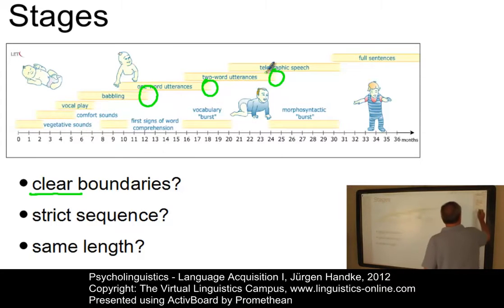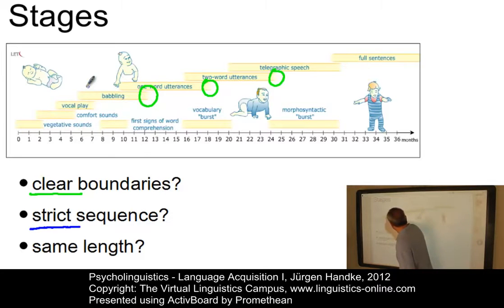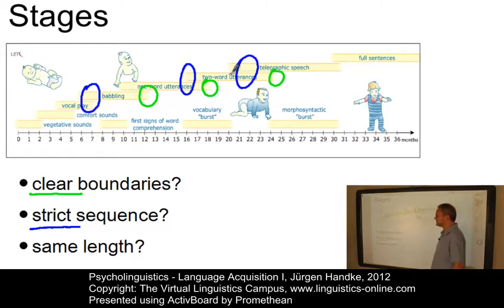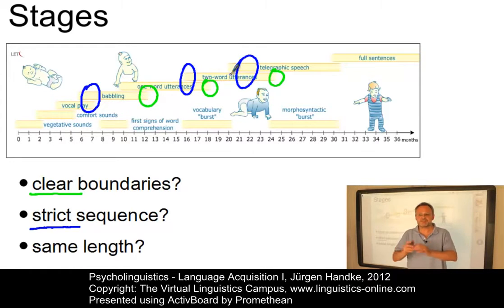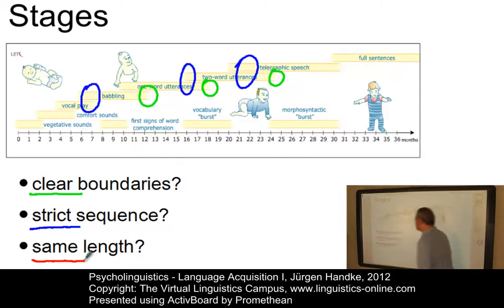The second question concerns the sequential character of these stages of language acquisition. It is relatively clear that they do not occur in a strict sequence, but overlap to some extent. While normal children pass through all of these stages, individual stages can be stretched out or compressed to a different extent for different children — in other words, these stages differ in length for individual children.